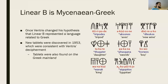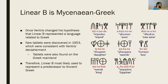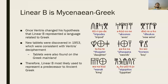It was also found that these tablets were on the Greek mainland, not just in Crete where they had initially been found. Based on that kind of evidence, we can conclude that Linear B most likely was used to represent a predecessor of ancient Greek.